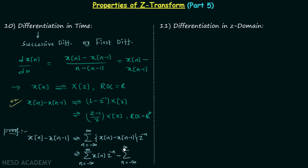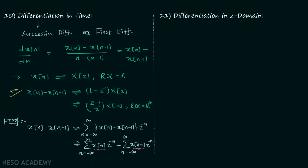Then we subtract the summation from n equals minus infinity to plus infinity of x[n-1] multiplied by Z to the power minus n. The first term is the standard form of the Z transform of x[n], giving X(z). The second term, with discrete time signal x[n-1], has Z transform equal to Z⁻¹ multiplied by X(z) by the time shifting property already discussed. Taking X(z) common gives (1 - Z⁻¹)·X(z), thus proving the differentiation in time property.